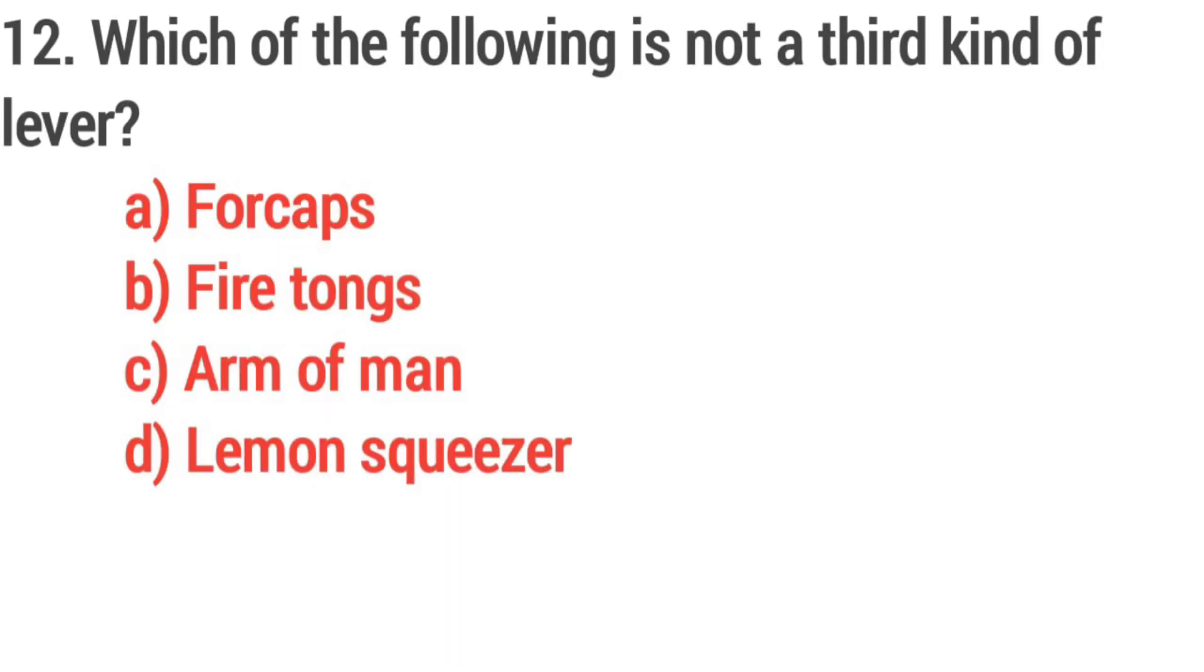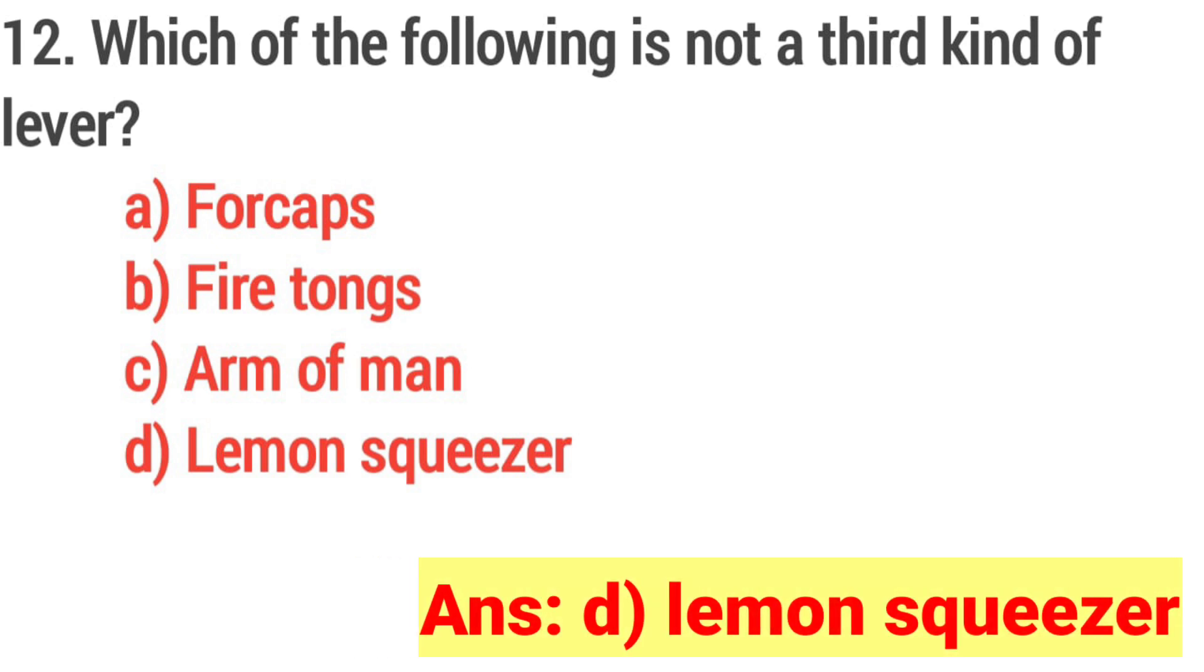Question 12. Which of the following is not a third type of lever? Answer: Option D, Lemon squeezer.